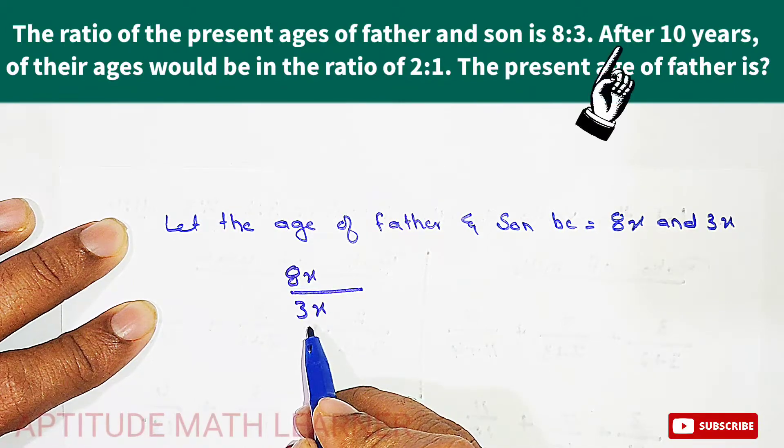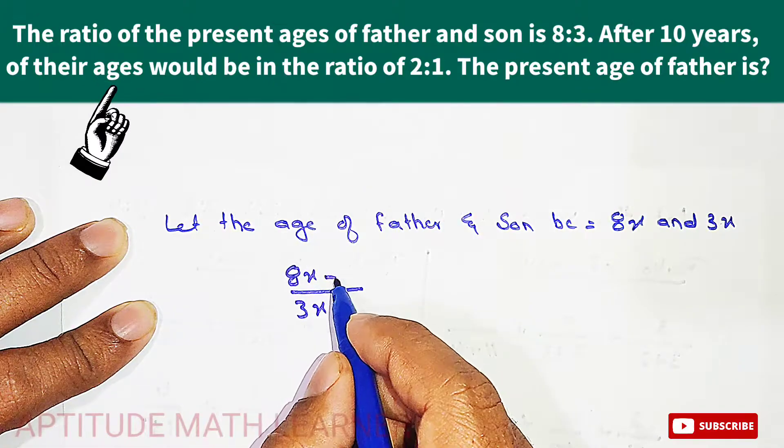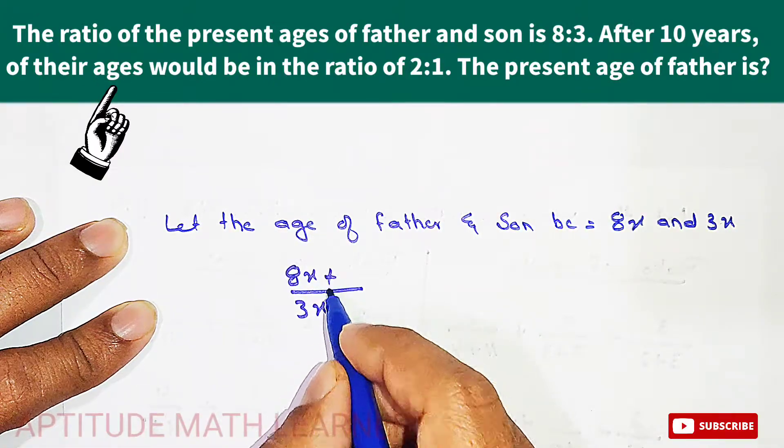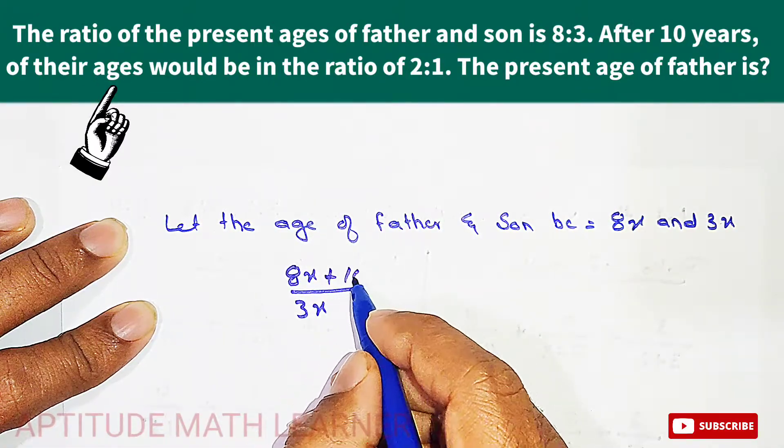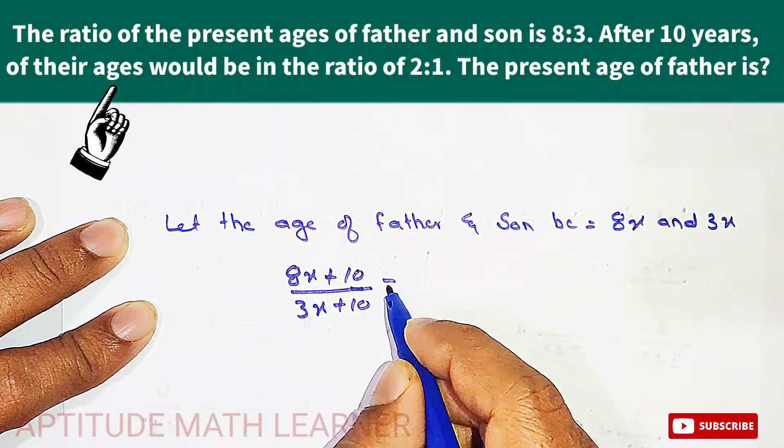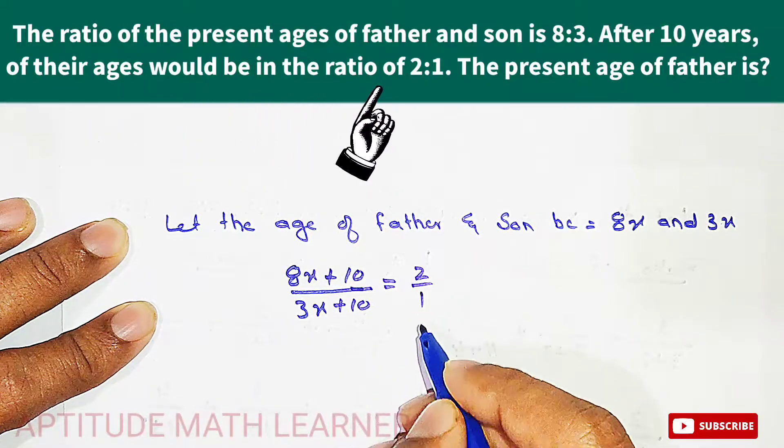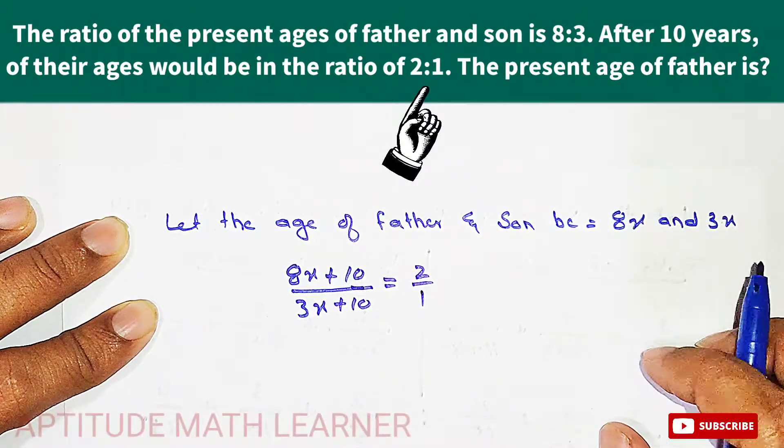After 10 years of their age—after 10 years means we have to add 10 years to their ages—and then the ratio becomes 2 is to 1. So now we have to find out the father's age.